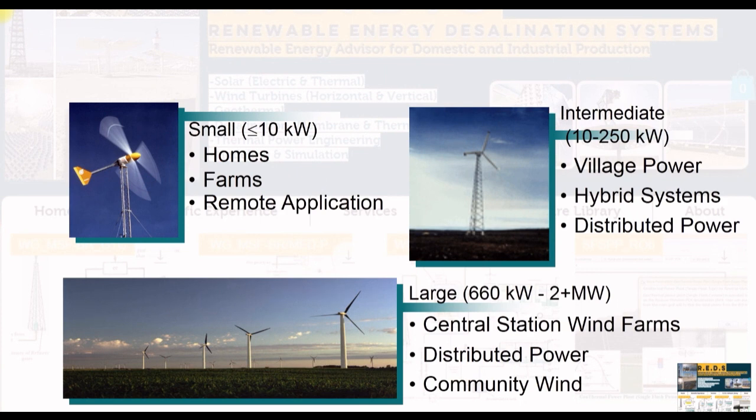According to the application, we can categorize our waterbines. First of all, lower than 10 kilos. It's for homes, farms, some specific facilities. And intermediate one is up to 250 kilowatts for village power hybrid system and so on. Large scale, it's up to two megawatts, maybe up to eight megawatts. Station with the farms, offshore, distributed power, and so on.